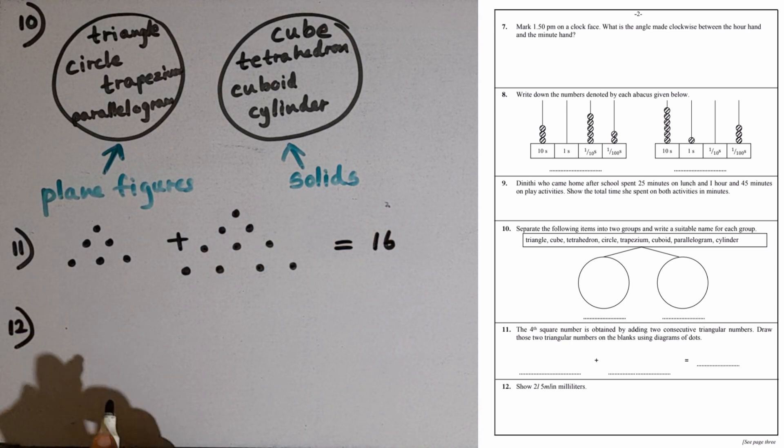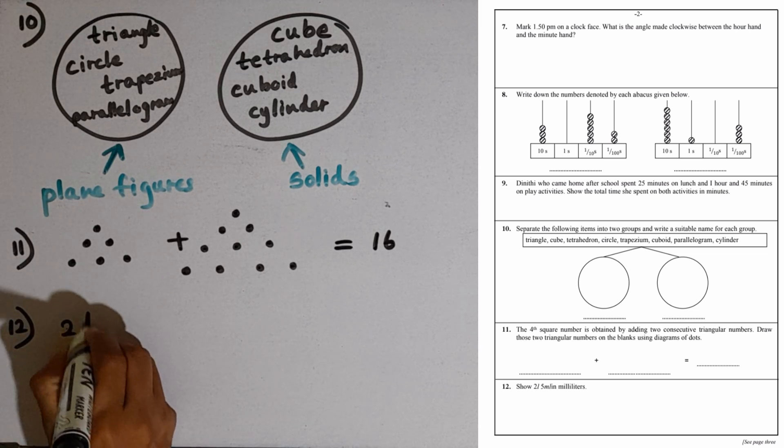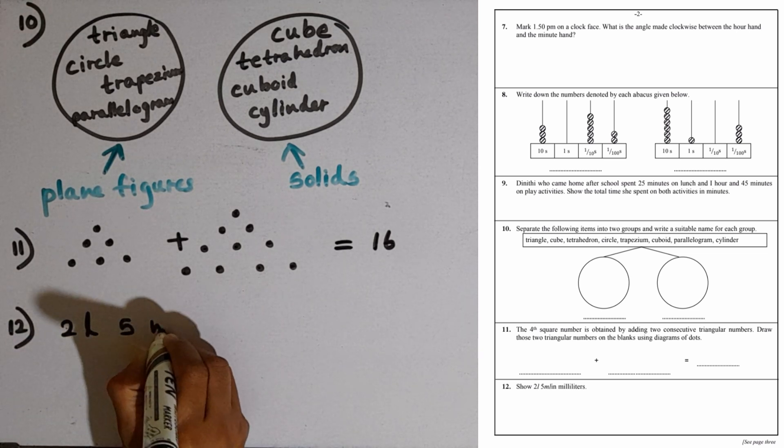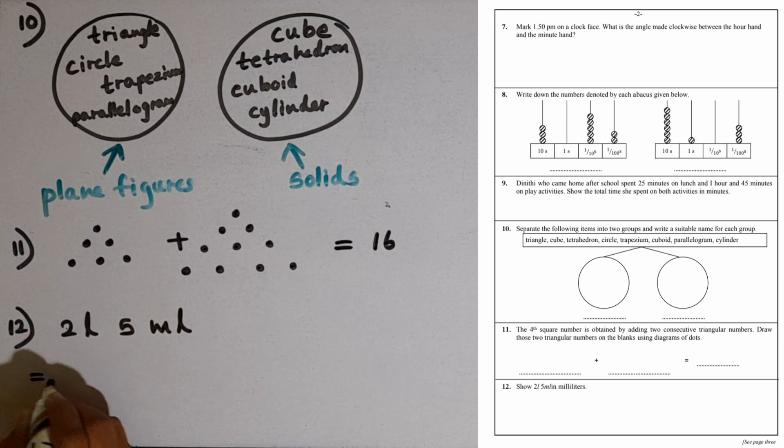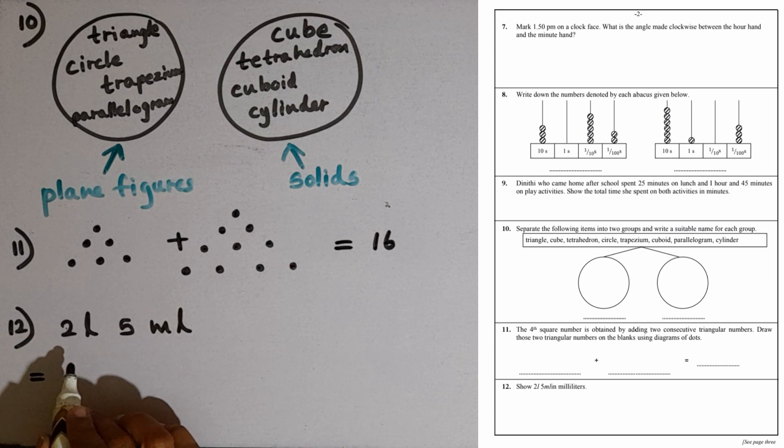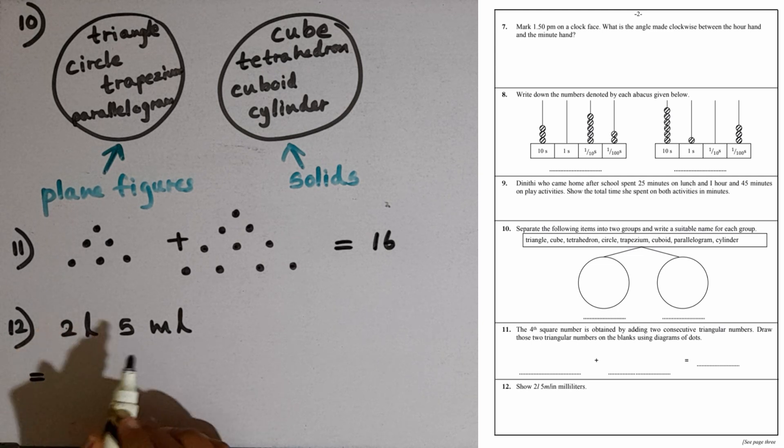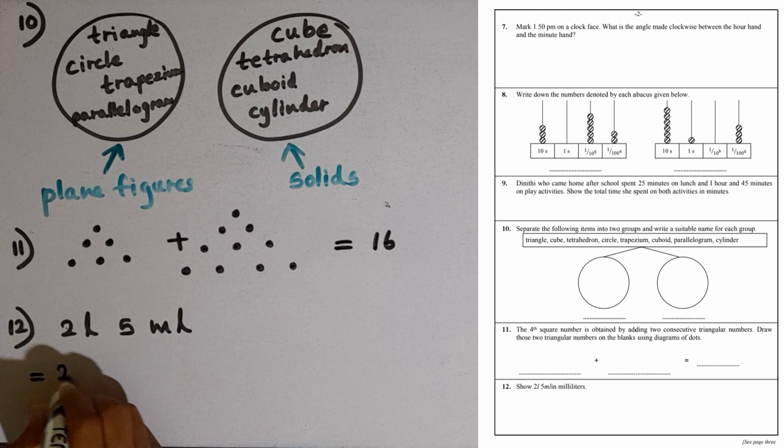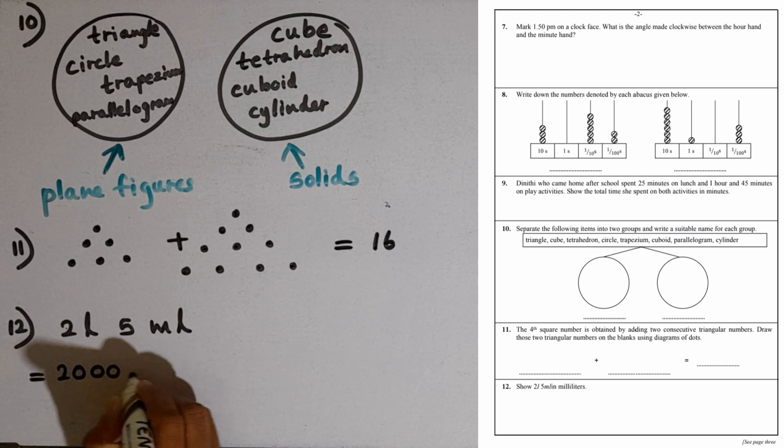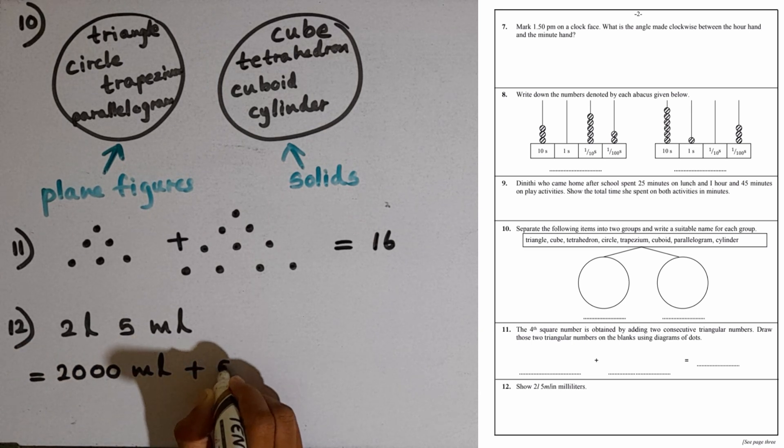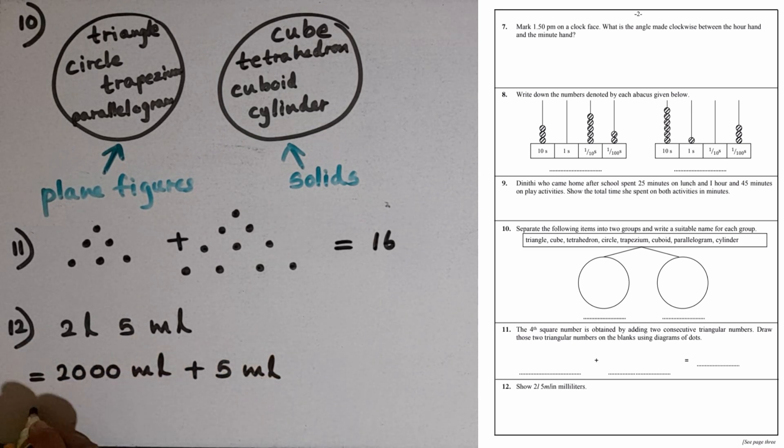Question number 12: 2 liters 5 milliliters in milliliters. 2 liters can be converted as 2000 milliliters, whereas 1 liter equals 1000 milliliters. So 2000 milliliters plus 5 milliliters, the addition is 2005 milliliters.